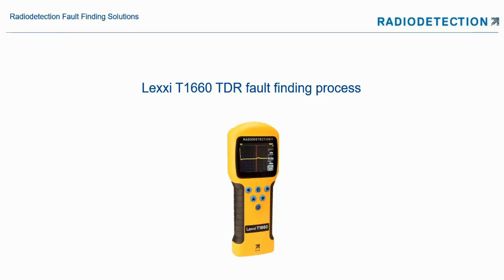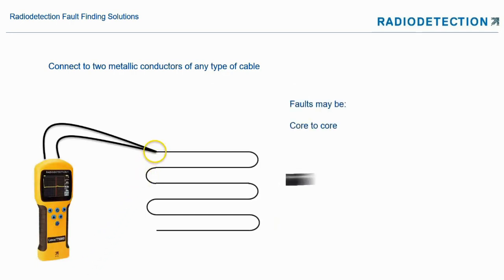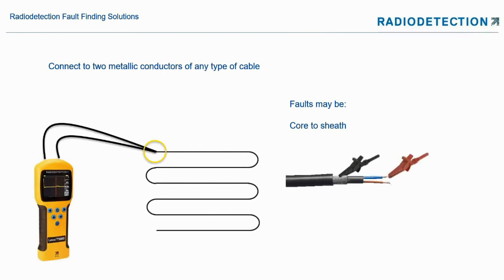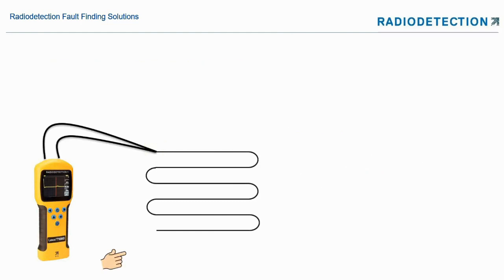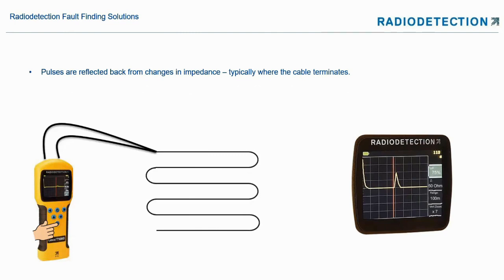There is a process we use with the TDR. First, we need to connect to two metallic conductors on any type of cable — we may be connecting core to core, or core to sheath. The TDR transmits pulses along the cable and we get reflections from anywhere there's a change of impedance. This is probably where the cable terminates, so with an unbroken cable, we'll have a change of impedance at the end of the cable.